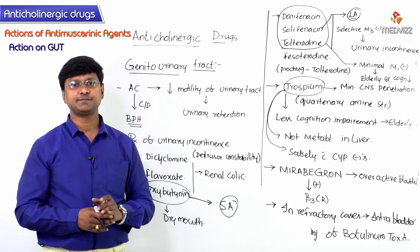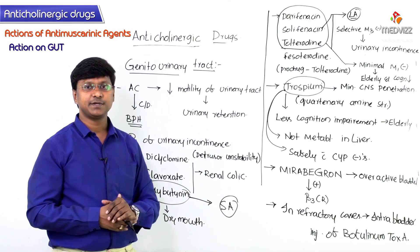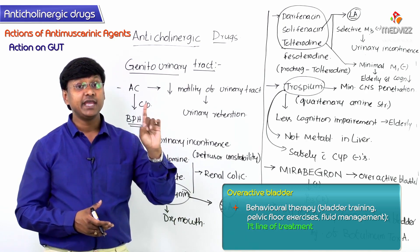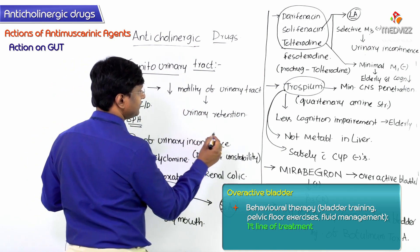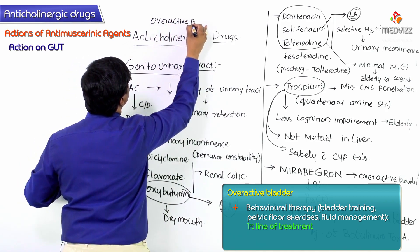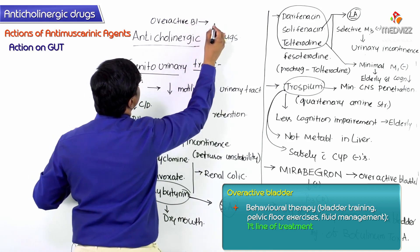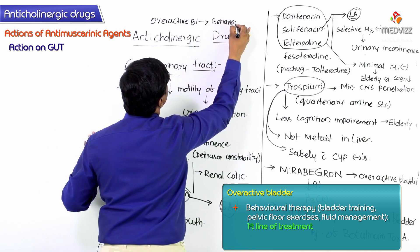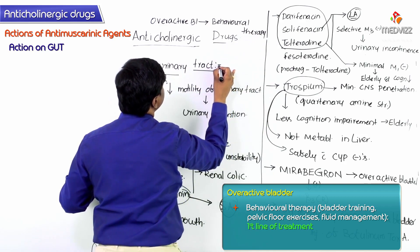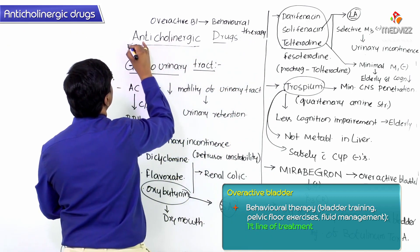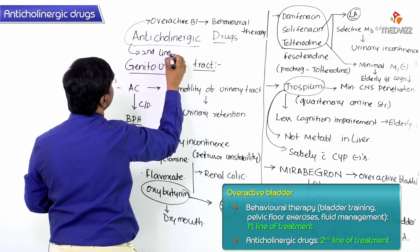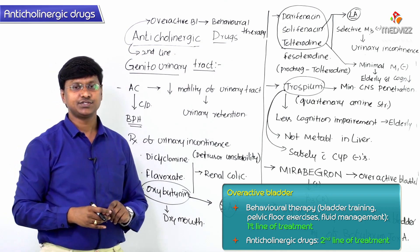In overactive bladder or urinary incontinence, the first-line treatment is behavioral therapy. Anticholinergic drugs are second-line treatment for overactive bladder.